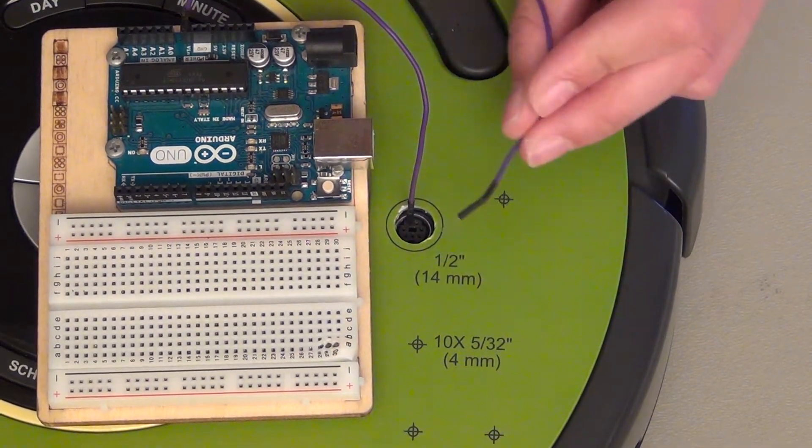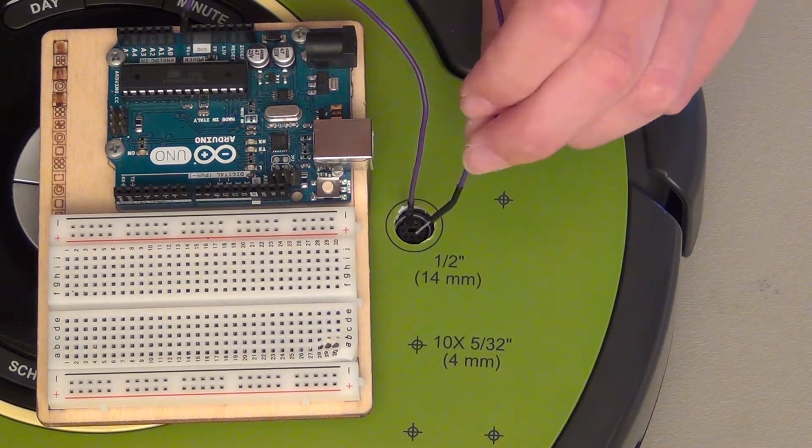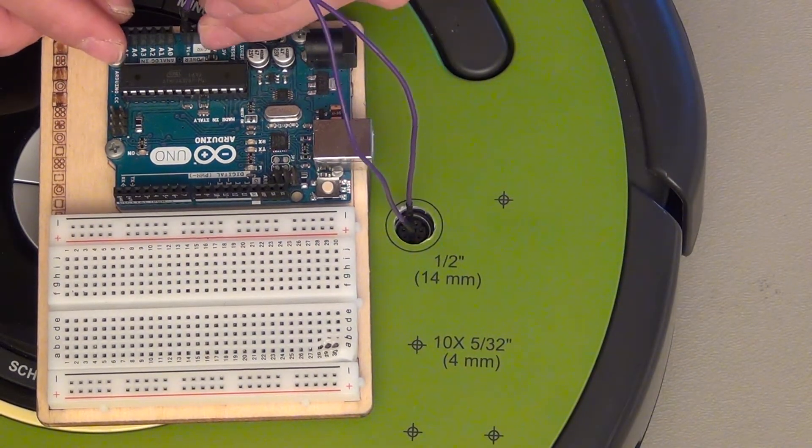Then GND is our pin six and seven, so it's these two over here. I'm just gonna go ahead and plug into six, then plug that into GND.